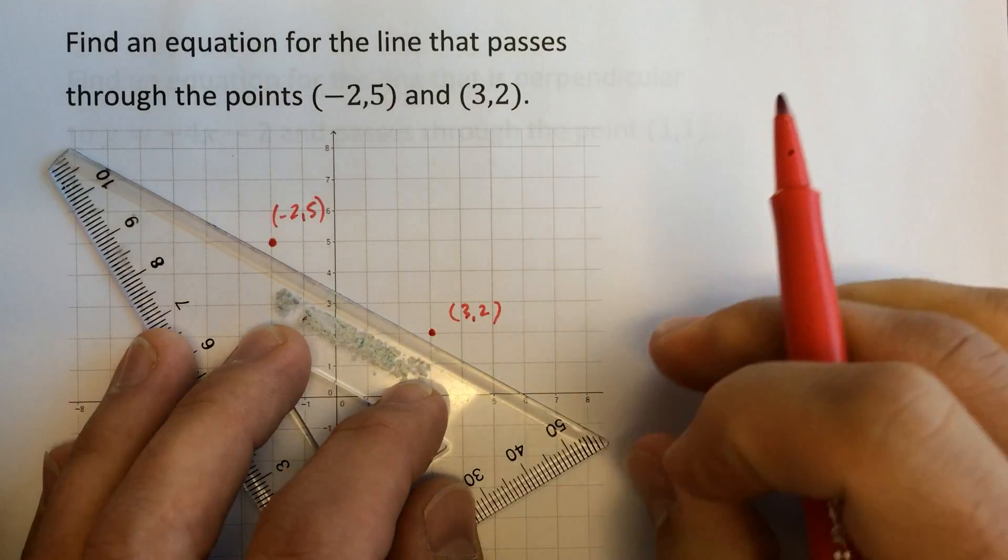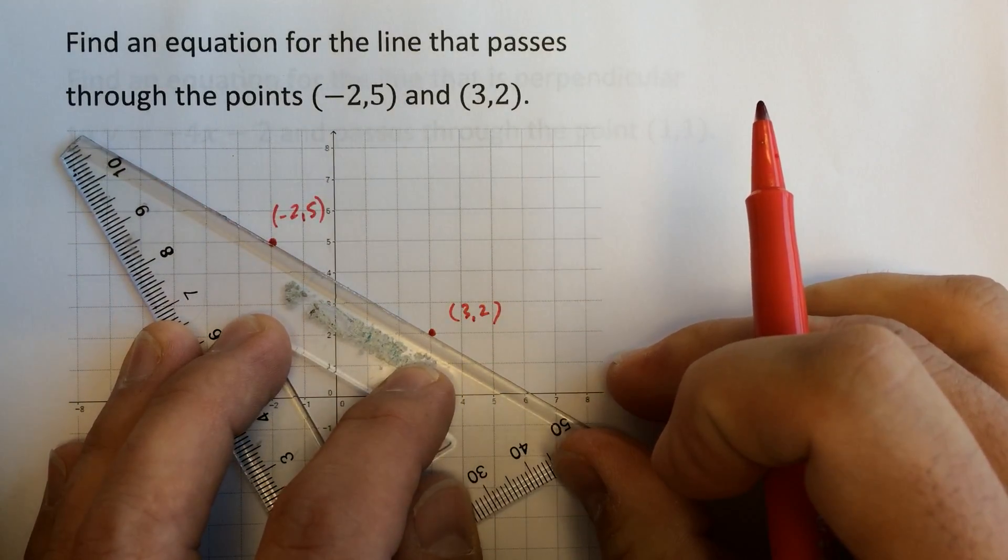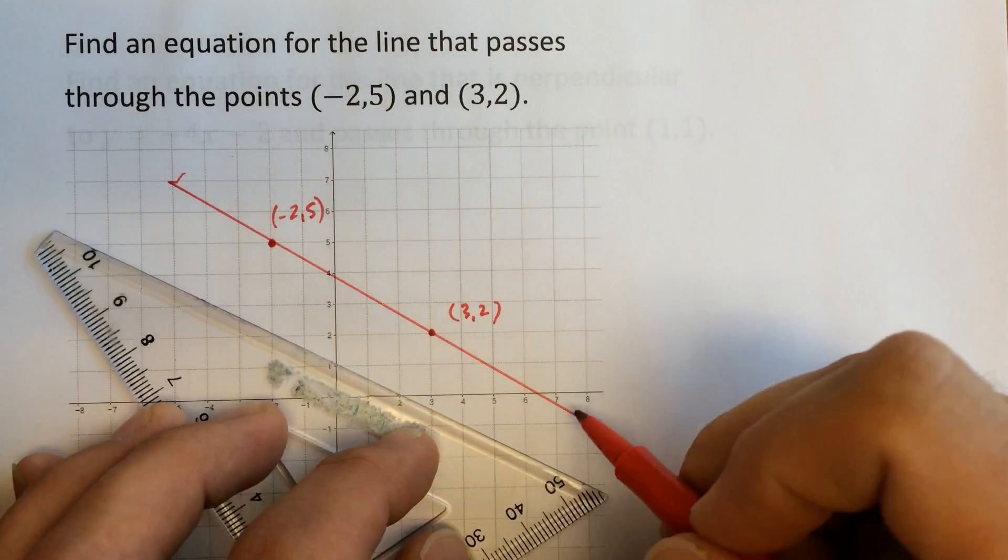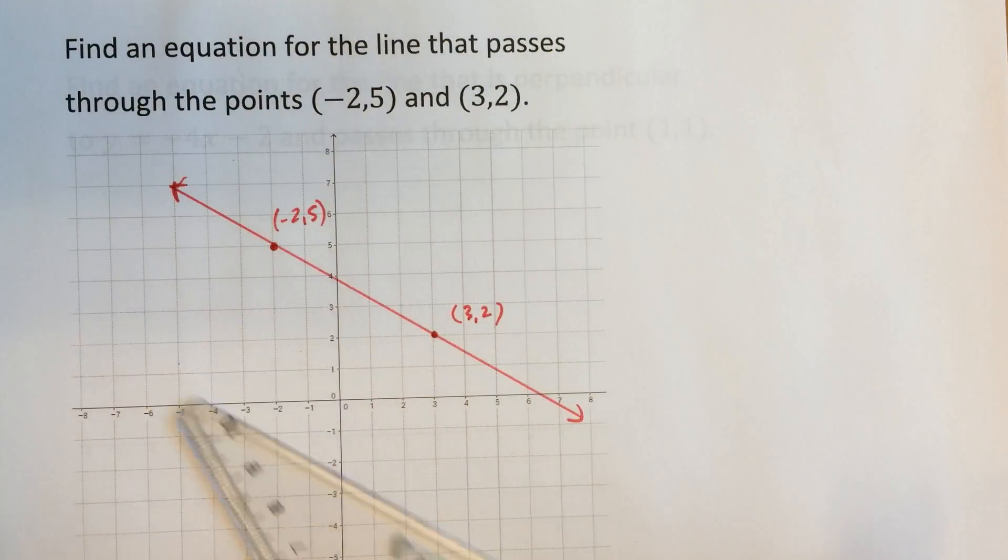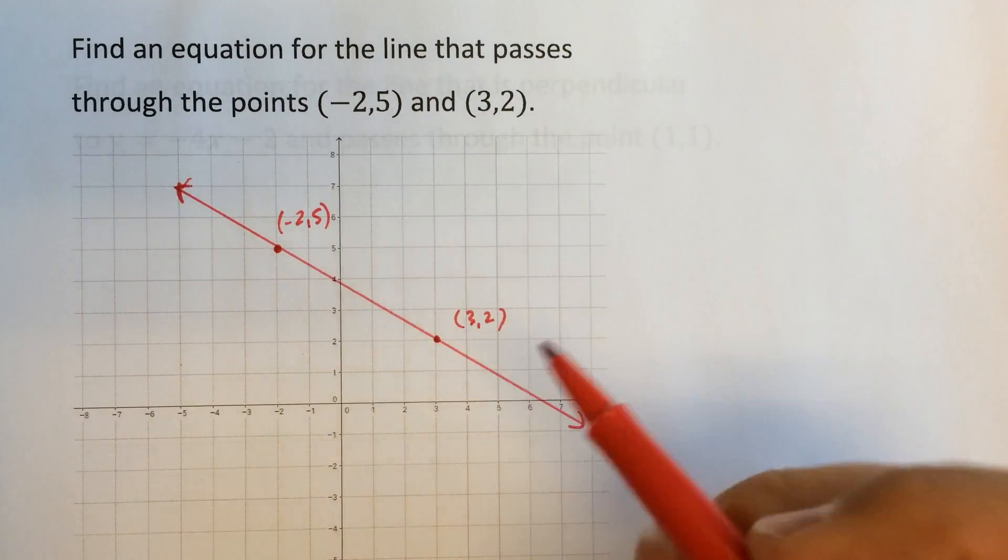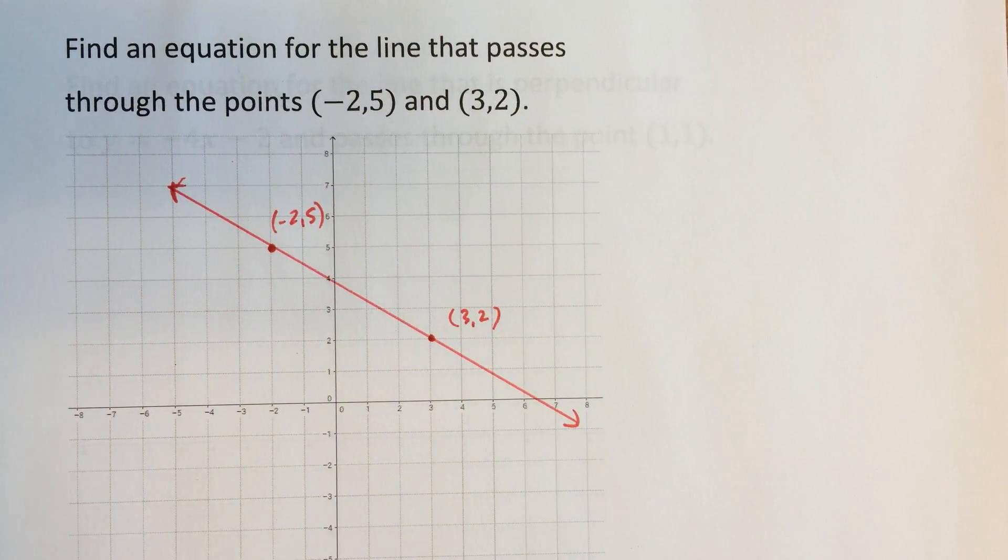And so let's just connect these to show graphically what this is going to look like. Looks about like this. And so we want to find the equation for the line that goes through these two points.